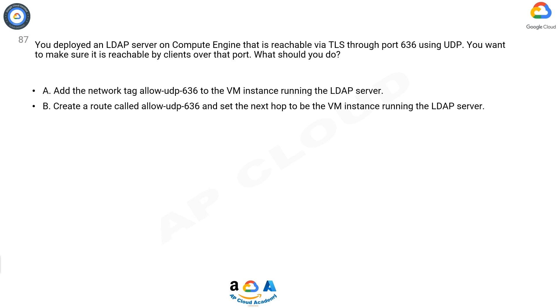A. Add the network tag Allow UDP 636 to the VM instance running the LDAP server. B. Create a route called Allow UDP 636 and set the next hop to be the VM instance running the LDAP server.